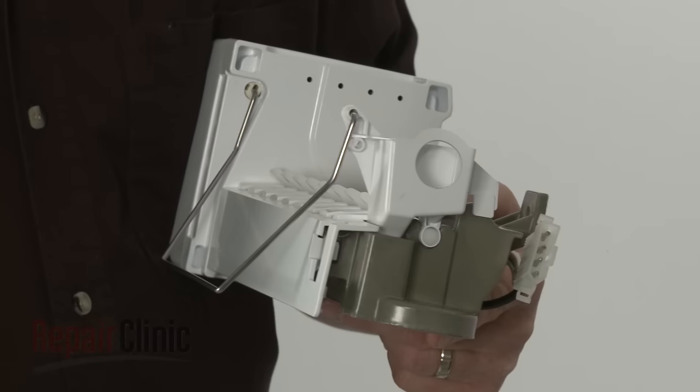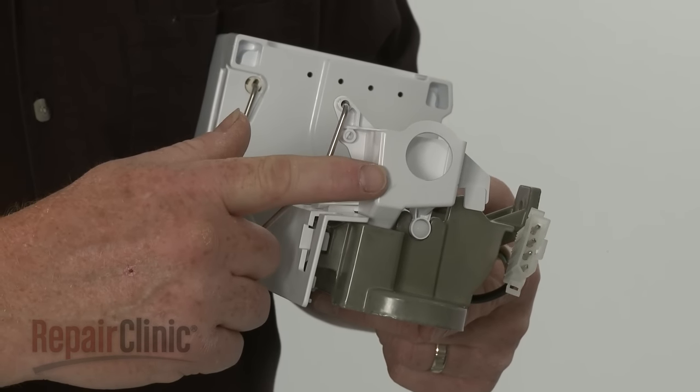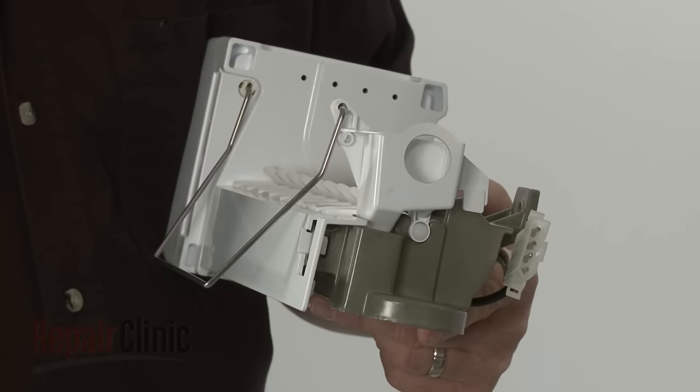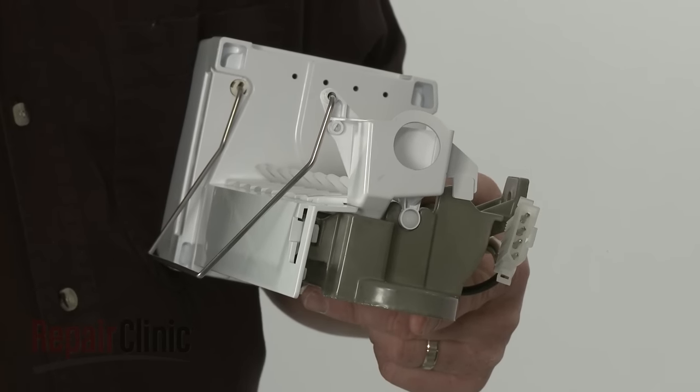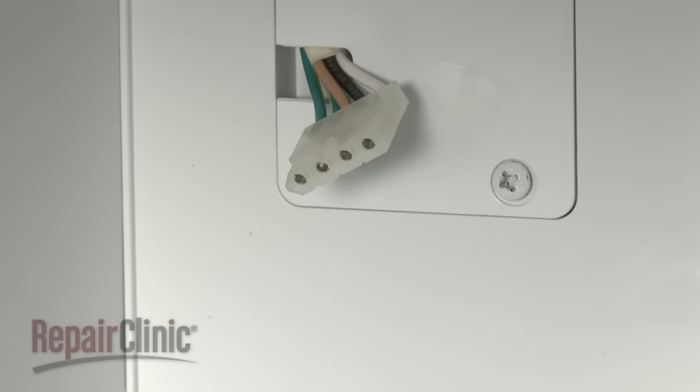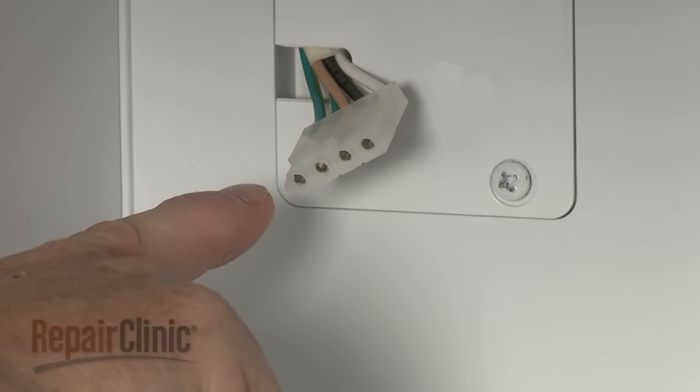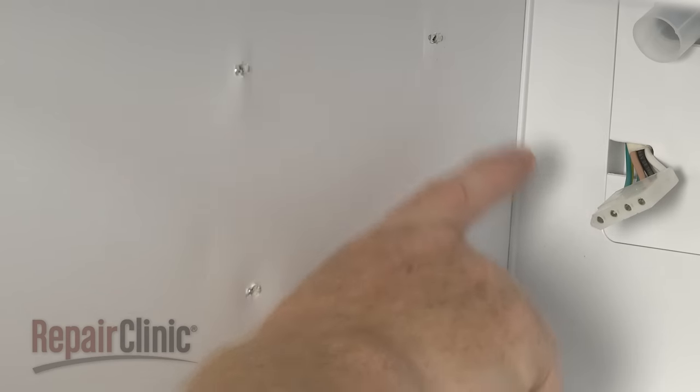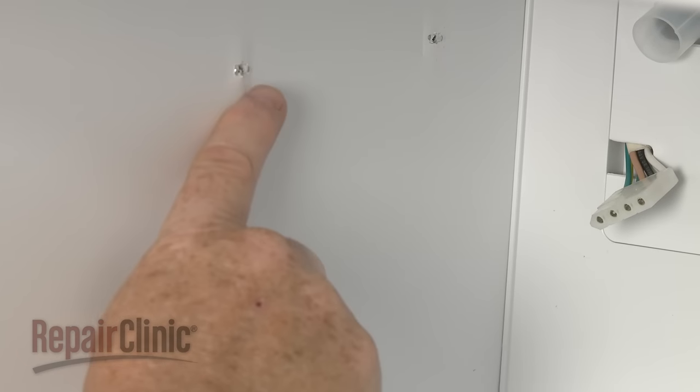Before you mount the ice maker, confirm that there is an access hole for the fill tube. If not, you will need to remove a knockout plug or tap. If this is the first time an ice maker has been installed in the appliance, you may need to remove a blank connector from the wire harness connector and remove the plugs from the three mounting holes in the liner.